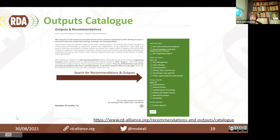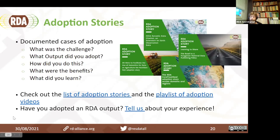We have an outputs catalog as well, which lets you search through the current outputs that RDA has. You can search by status, by topic, and by domain. If you're interested in seeing the adoptions of some of our outputs, we have a whole list of adoption stories — documented cases of adoption that answer questions like: what was the challenge, why did this organization want to adopt an output, what output did they adopt, how was it done, what were the benefits, and what did you learn.